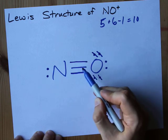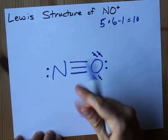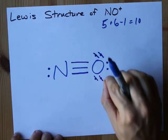Nitrogen now has 1, 2, 3, 4, 5, 6, 7, 8 electrons. That satisfies the octet rule. Yes.